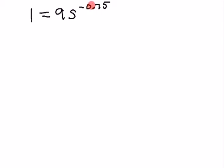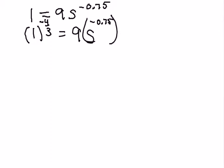So I know that is negative three-fourths, so I need to raise everything to the negative four-thirds. So I'm going to have one to the negative four-thirds equals 9s to the negative 0.75, or remember that's negative three-fourths, and we're going to raise the whole thing to four-thirds.